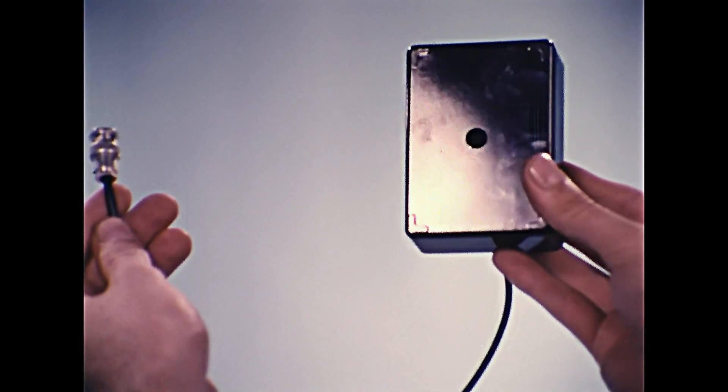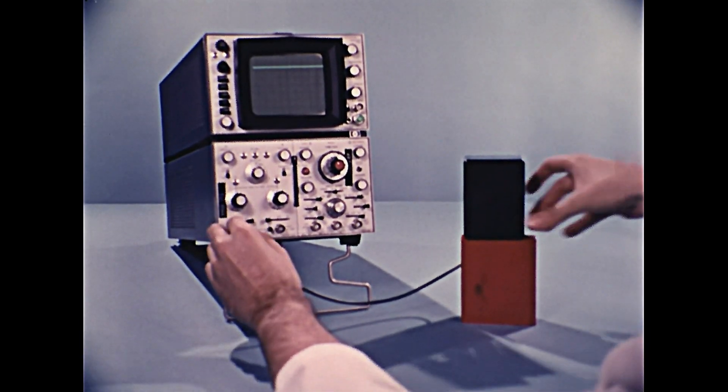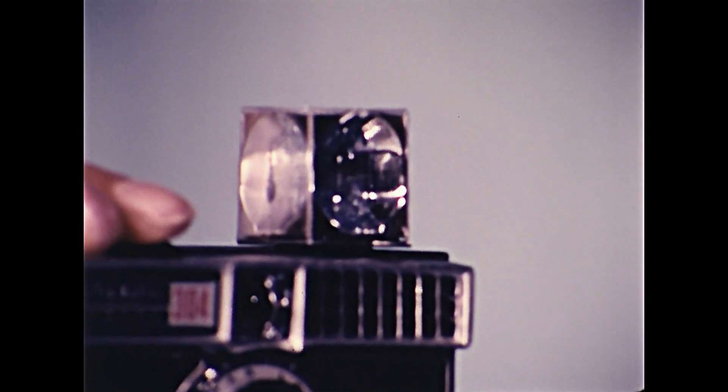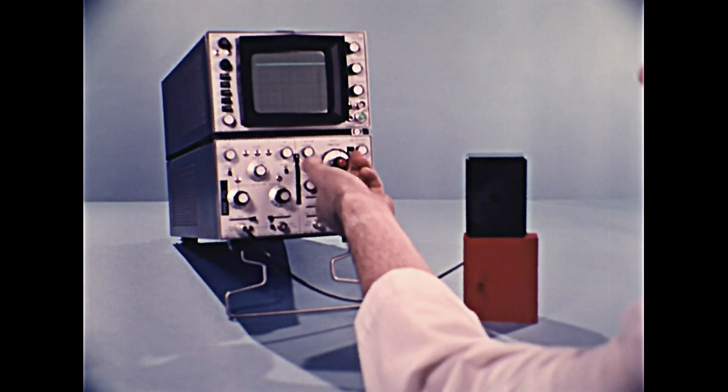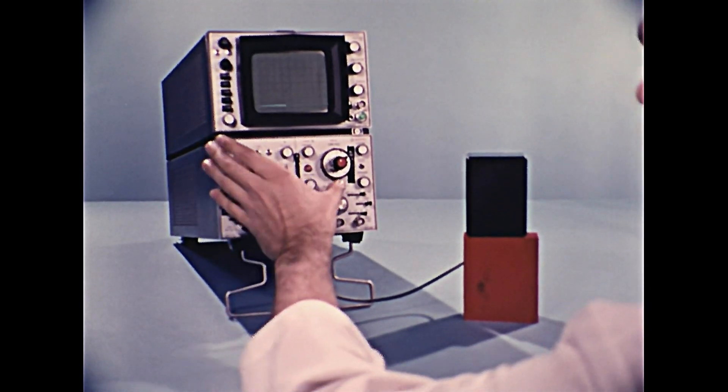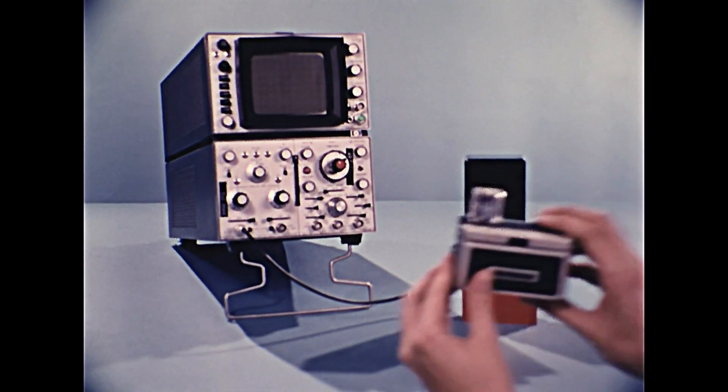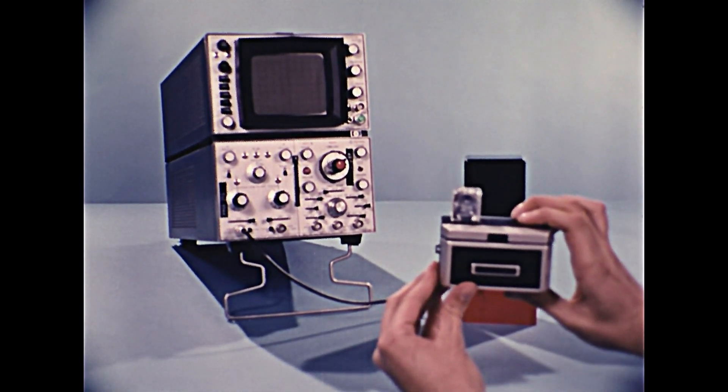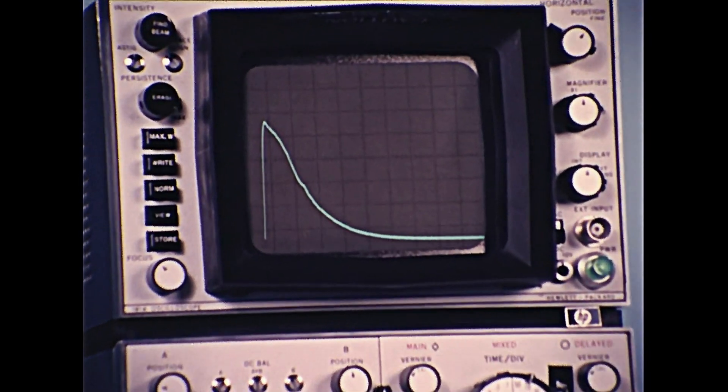A photo cell is a transducer that converts light into voltage. How long did the flash stay on? By knowing the speed of the horizontal sweep, our built-in clock, we can graph the intensity of the flashbulb. This special oscilloscope is triggered by the flash signal and can store the image.